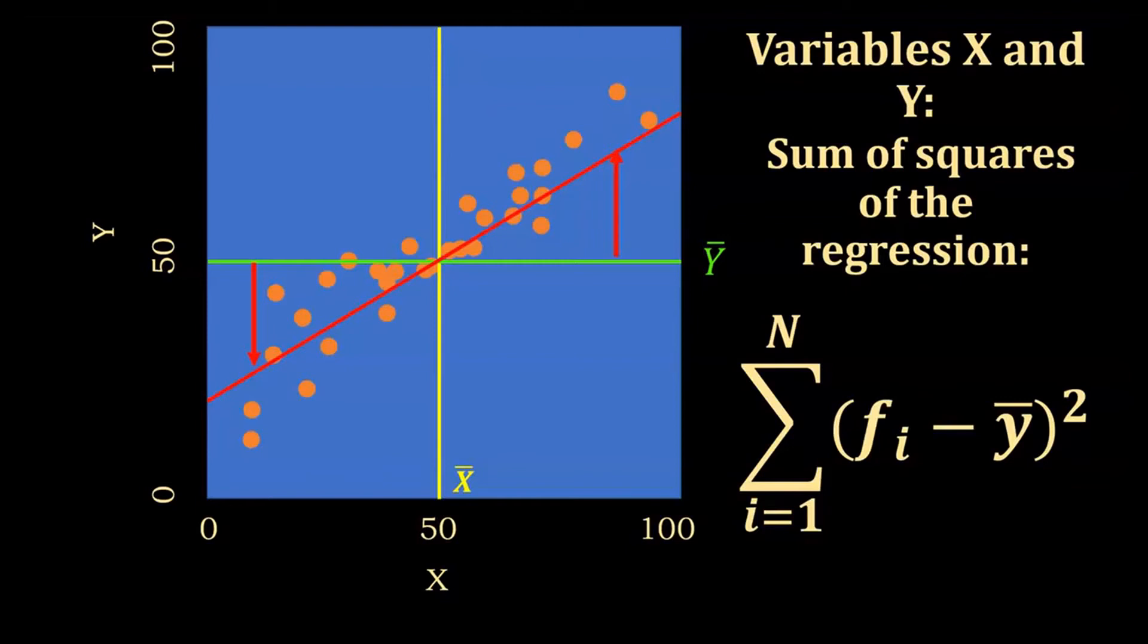Now, we do that by using an equation that includes the sigma that we saw before, which means sum, and i equals 1 to N. Again, that means that we are going to sum all the values that go from 1 to N, which in this case is 30, so we are going to sum 30 values.